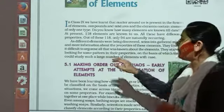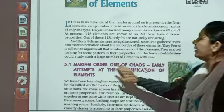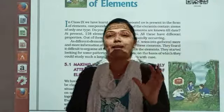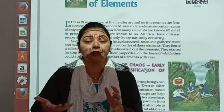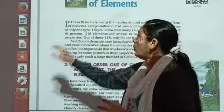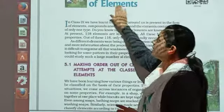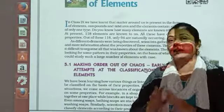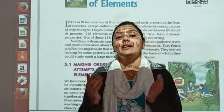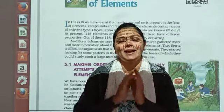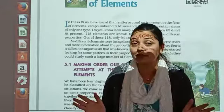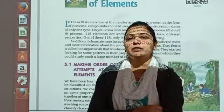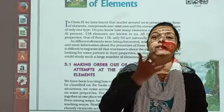They start looking for some pattern in their properties on the basis of which they could study such a large number of elements with ease. They are trying to find out any pattern so that the study of elements becomes easy. Now, what is the name of the chapter? Periodic classification of elements. Everyone knows what is classification, but what is periodic classification? We are also going to understand the name of the chapter.